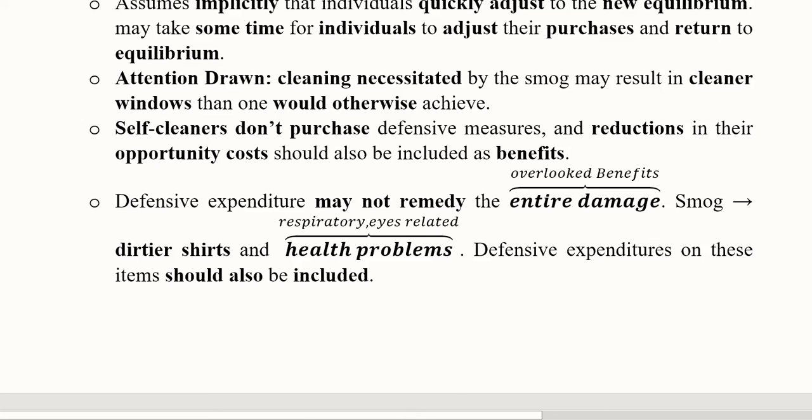Finally, the defensive expenditures are undertaken on one part of the damage, and that damage is the unclean windows. But what if there are other negative effects and negative externalities? For example, if there is smog, there will be dirtier shirts, and there will be health problems relating to respiratory system. The eyes will also suffer due to the smog. So if we omit these externalities, definitely we will omit the defensive expenditure that we can undertake on these negative externalities.